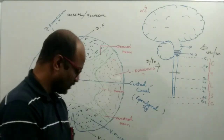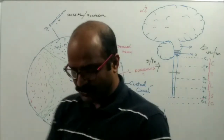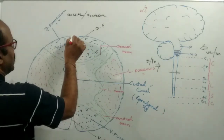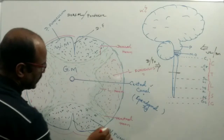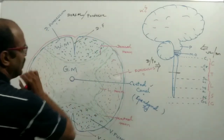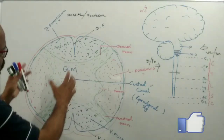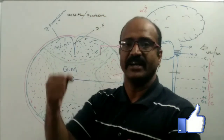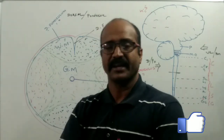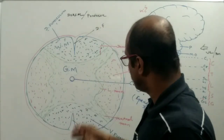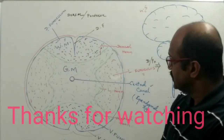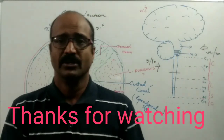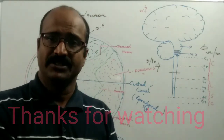The spinal cord is also protected by the meninges, as found in the case of the brain — three layers of meninges. It is also protected by the vertebral column, since it is present inside the vertebral canal or spinal canal. Additionally, it is protected by ligaments and cartilage. This is the whole structure of the spinal cord. Thank you for watching.